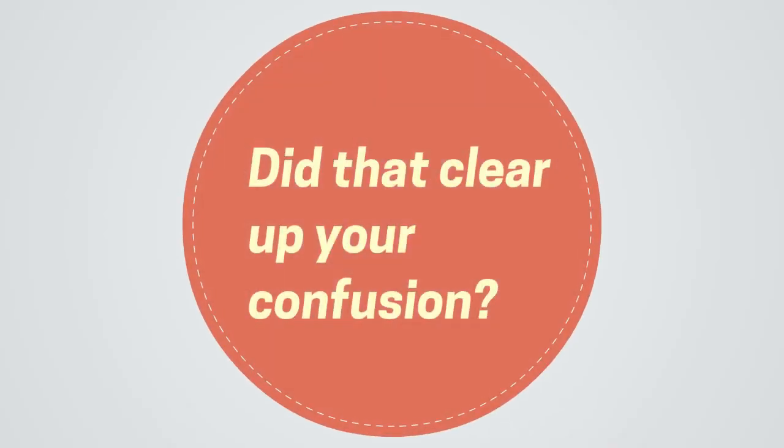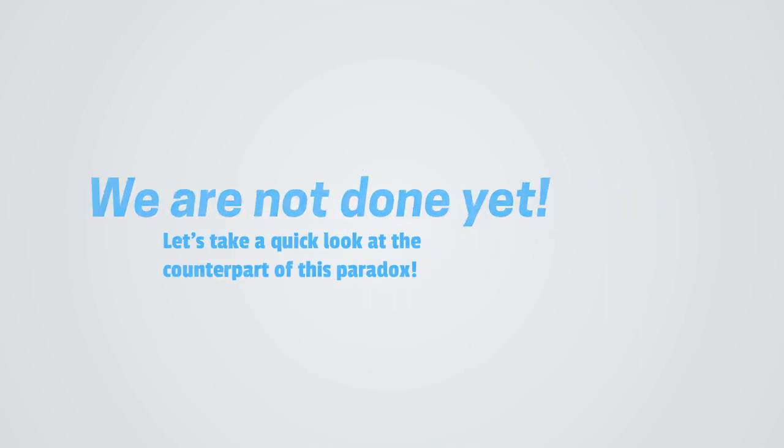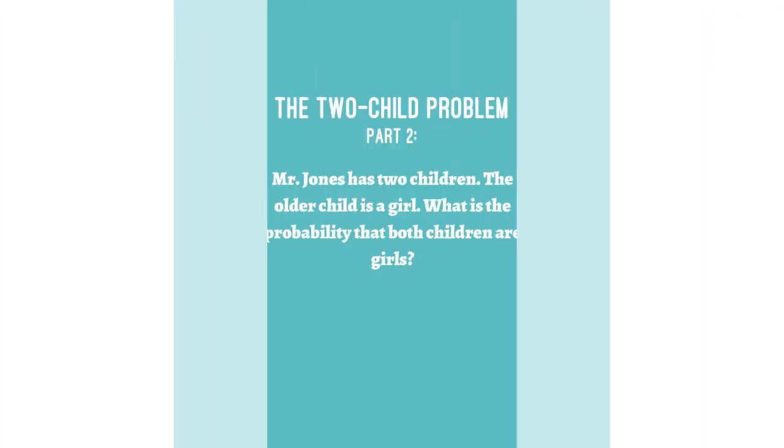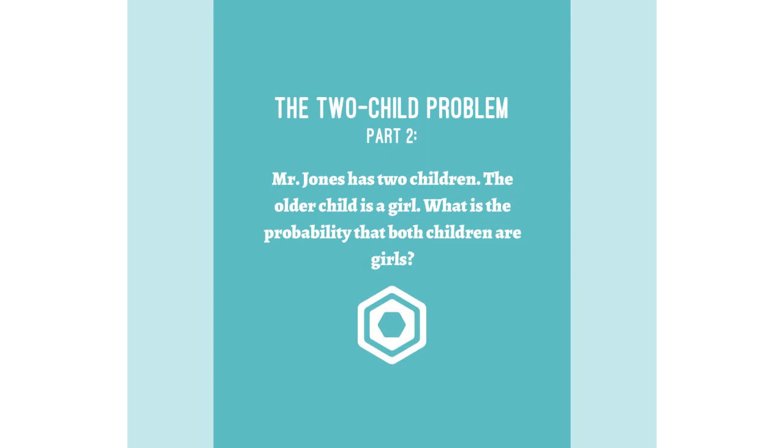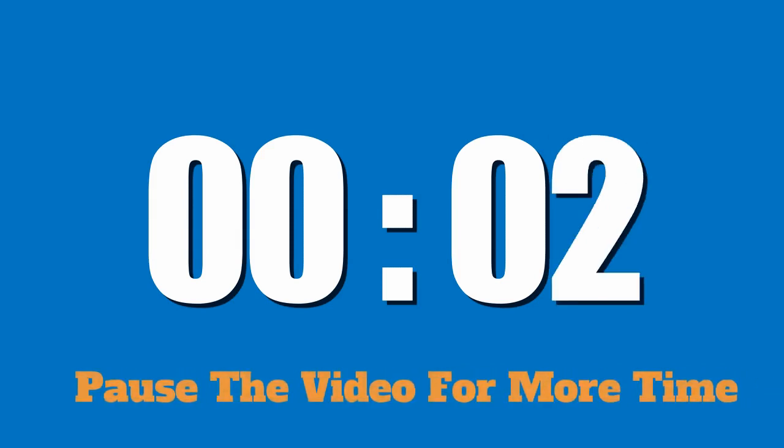Did that clear up your confusion? We are not done yet though. Let's take a quick look at the counterpart of this paradox. The two child problem, part two. Mr. Jones has two children. The older child is a girl. What is the probability that both children are girls? Pause the video for more time.